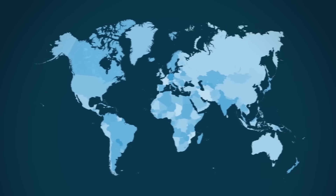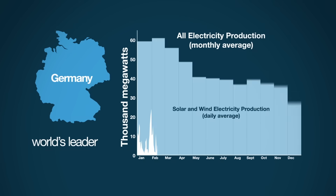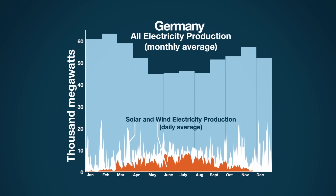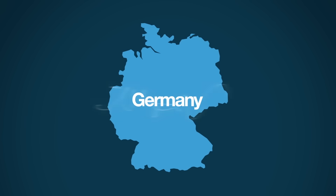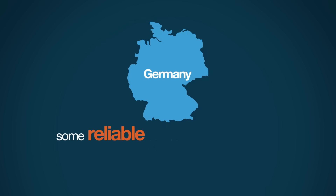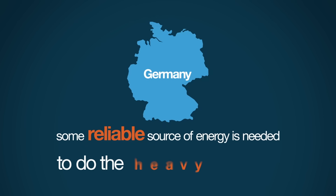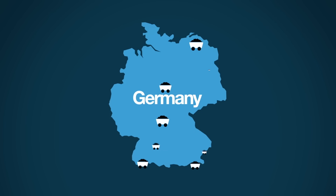Here's what solar and wind electricity look like in Germany, which is the world's leader in renewables. The word erratic leaps to mind. Wind is constantly varying, sometimes disappearing completely. And solar produces little in the winter months, when Germany most needs energy. Therefore, some reliable source of energy is needed to do the heavy lifting. In Germany's case, that energy is coal.